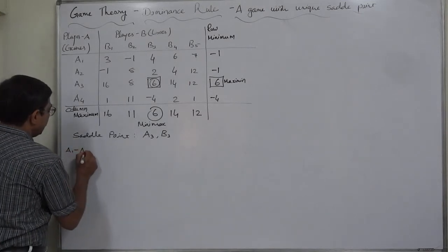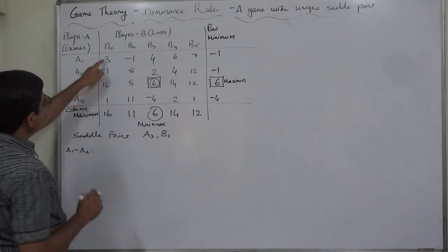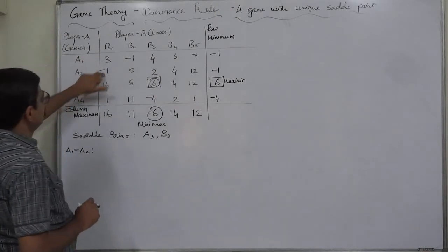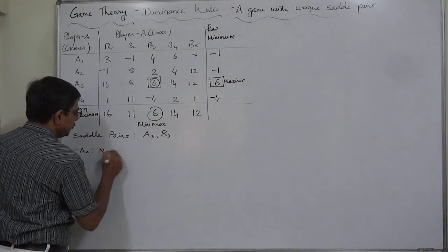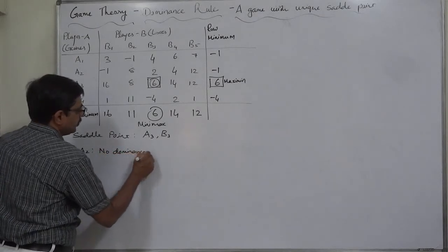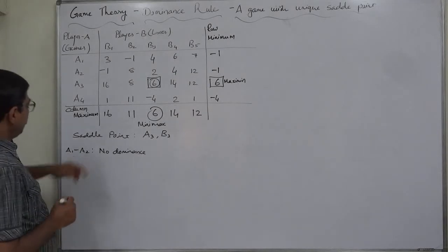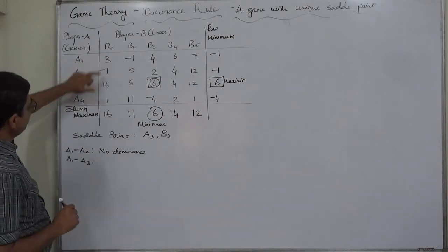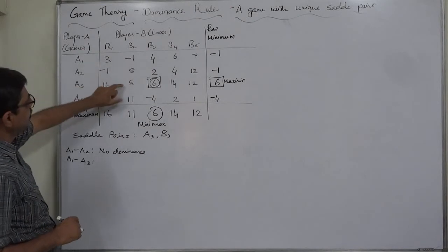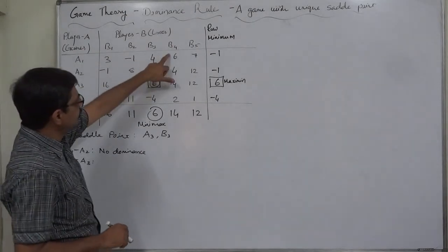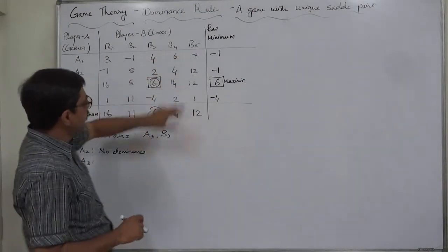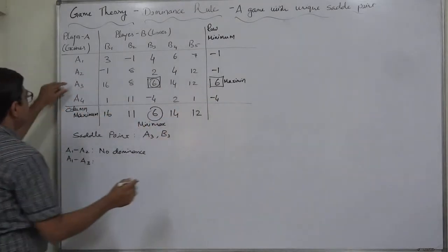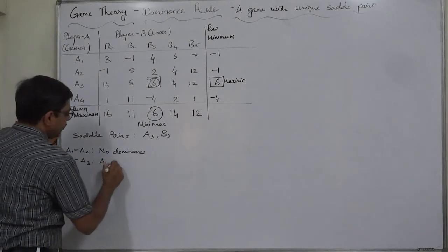Now let's apply the dominance rule to this game. Comparing A1 and A2: gain of 3, loss of 1, loss of 1, gain of 3, loss of 1, loss of 1, gain of 8 — no dominance of either one. Comparing A1 and A3: the values are gain of 3, gain of 16, loss of 1, gain of 8, gain of 4, gain of 6, gain of 6, gain of 4, gain of 6, gain of 14, gain of 7, gain of 12.